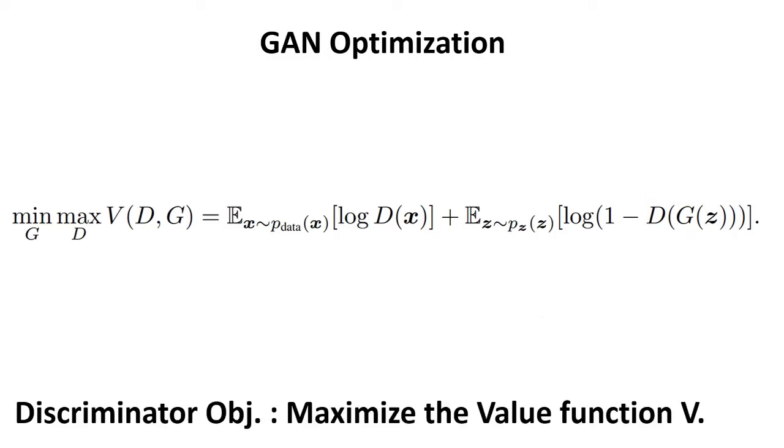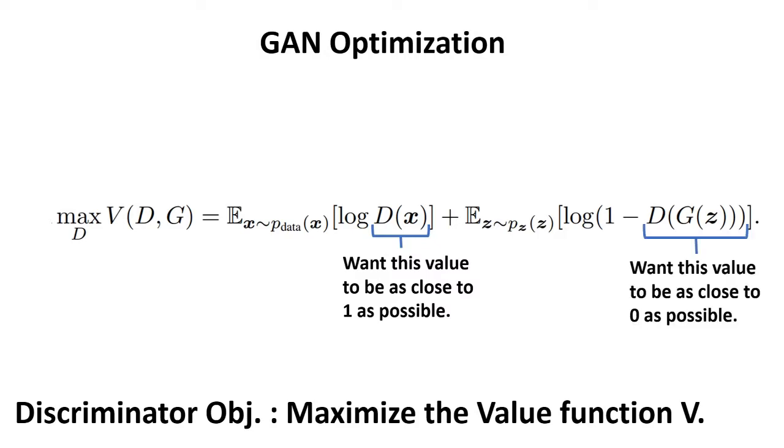The goal of the discriminator is to maximize the value function V. Well of course, for the discriminator we wanted to be able to correctly identify the real samples to give them a value of one. We also wanted to identify the fake samples, giving those a value of zero.